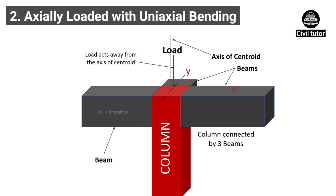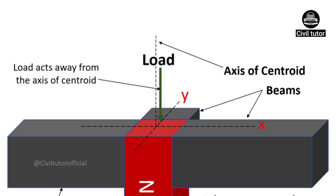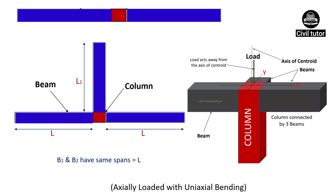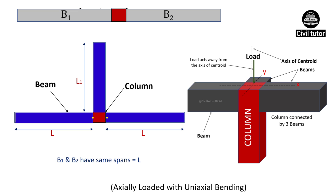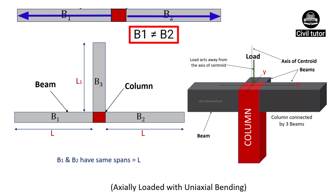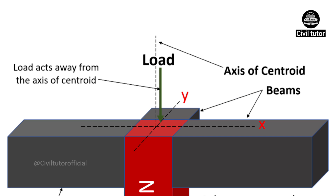In case of axially loaded columns with uniaxial bending, the vertical loads acting on the column do not pass through the centroid of the section. Rather, the loads act eccentrically either on the x-axis or the y-axis of the column cross-section. These columns have beams either only in one direction or in three directions. When connected by three beams, the beams in the opposite direction should have a uniform length and cross-section. When connected by two beams on opposite sides only, both beams should have unequal spans or cross-sections. In all cases, the net moment should be created along one direction only, that is along the x-axis or y-axis.